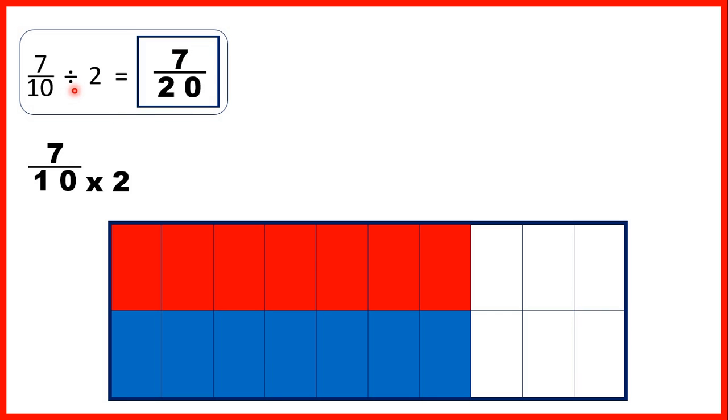Also notice, dividing by 2 is the same as finding a half, but it's also the same as multiplying by a half. So if we had 7 tenths times one half, we would do the same thing and get the same answer.